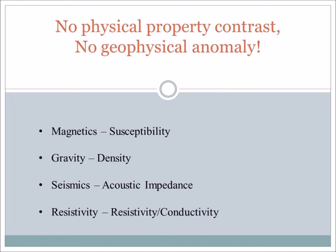Something very important to consider when taking geophysical measurements is that there's no point in making a measurement unless you have a physical property contrast between two rock types or within a rock type. If you're using magnetics, you need to have a change in magnetic susceptibility. If you're using gravity, you're looking at density, and you need a difference in density between two rock types or within a rock type.